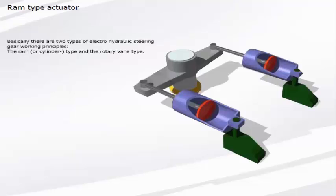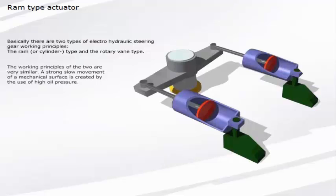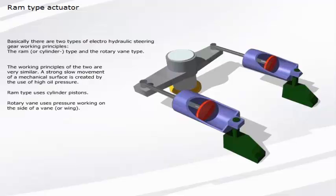Basically, there are two types of electro-hydraulic steering gear working principles: the RAM type and the rotary vane type. The working principles of the two are very similar. A strong, slow movement of a mechanical surface is created by the use of high oil pressure. RAM type uses cylinder pistons. Rotary vane uses pressure working on the side of a vane.